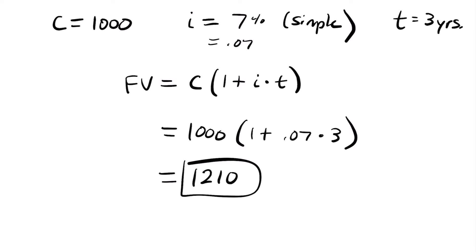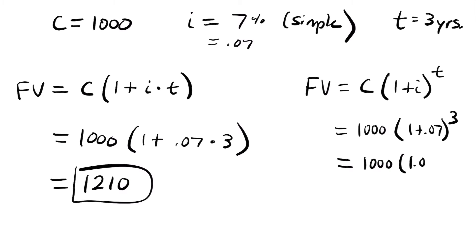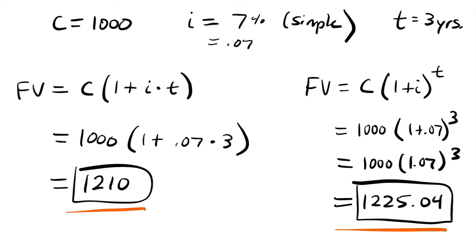How does this compare to compound interest? If that 7% was a compound interest rate instead, we'd use: future value equals c times 1 plus i to the t power. Plugging in the same values, we get 1000 times 1 plus 0.07 to the power of 3, which equals 1000 times 1.07 cubed, giving us $1,225.04. So over the three-year period, we earned more interest through the compound interest rate than through the simple interest rate.